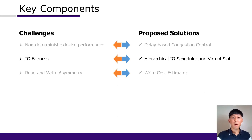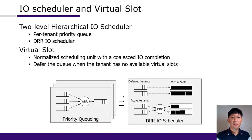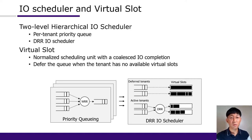Second, Jimbo implements a fair IO scheduling mechanism. The mechanism considers not only the types and sizes of IOs but also takes into account IO processing time with an optimization called virtual slot. The IO scheduling has a two-level hierarchical structure: a per-tenant priority queue provides flexibility for application-specific optimization, and a Deficit Round-Robin IO scheduler ensures fairness across tenants. A DRR algorithm can slow down IO submission of greedy tenants in terms of IO amount. However, the same amount of IO might have significantly different processing times in SSD, so Jimbo uses a virtual slot mechanism as a normalized scheduling unit.